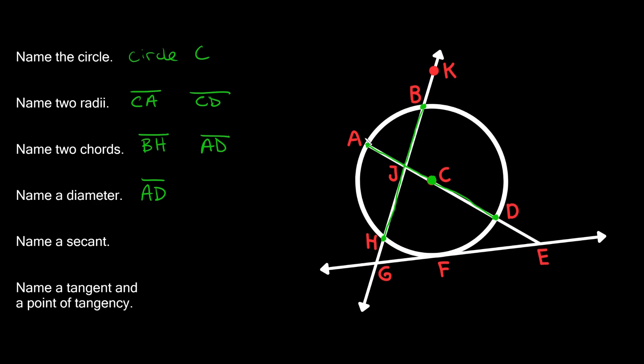Next one says name a secant. So a secant is a little different from a chord because it goes through the circle. It doesn't just end at the edges of the circle, but rather it goes straight through the circle at two points. So as you can see, in this case, this line right here from K to G would be a secant. So it's line KG.